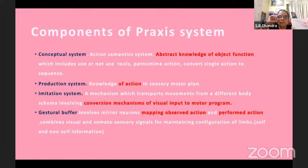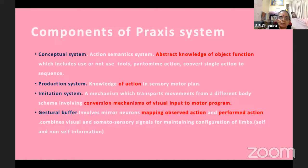For this we have a conceptual system, a production system, an imitation system, and a gestural buffer. The conceptual system is an action semantic system — an action understanding system. It is abstract knowledge of object functioning, which includes using or not using a tool, carrying out a primary action, and converting single actions into a sequence of actions. We do not carry out all activities — we carry out actions relevant to us. This abstract knowledge of object function is called the conceptual system.